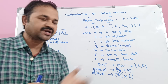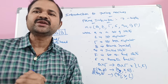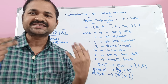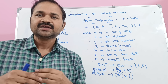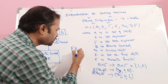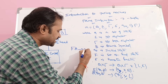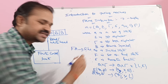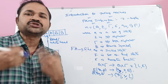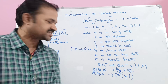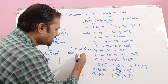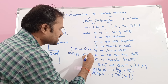Let us discuss the introduction to Turing machines. We know that the language accepted by finite automata is called a regular language, so finite automata accepts and recognizes regular languages. Likewise, the language accepted by pushdown automata is called a context-free language, so pushdown automata accepts and recognizes context-free languages.